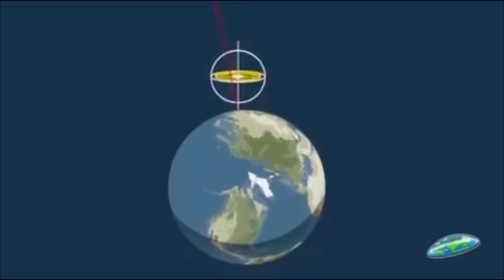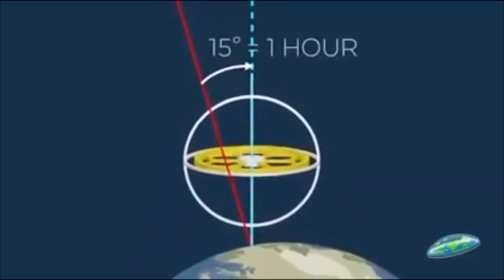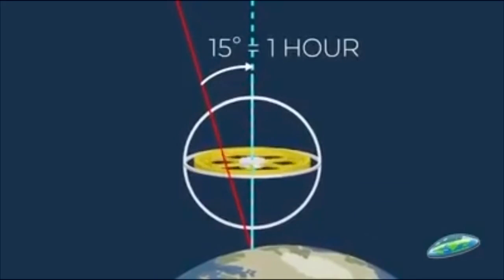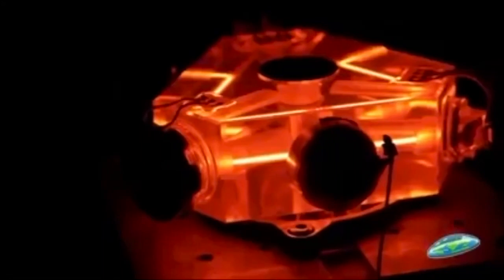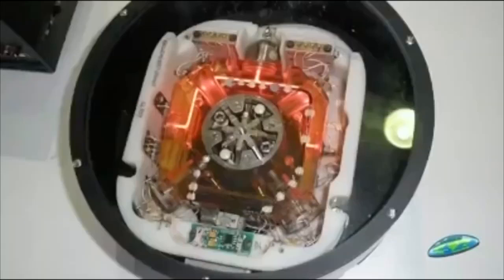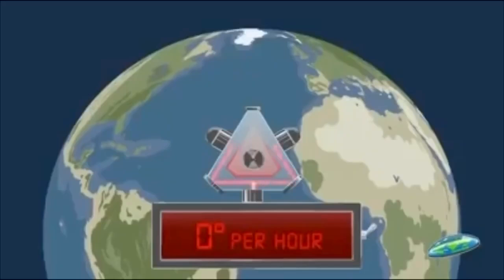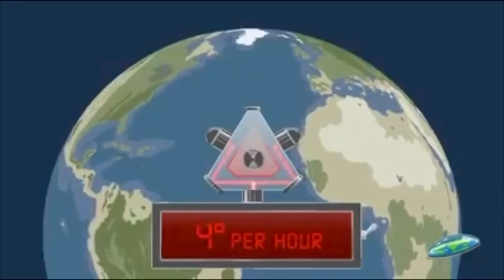Which is what we observe in gyroscopes — both mechanical and fibre optic. As the gyroscope appears to stay rigid in its reference frame, the Earth rotates underneath at a rate of 15 degrees per hour.